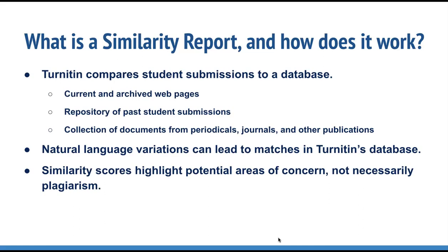Turnitin checks a student's work against a database of billions of web pages, student papers, and collected documents and publications to find instances of similarity or matches. If it finds any, Turnitin flags them for your review. Due to the nature of language, it's perfectly natural for an assignment to match against at least some of Turnitin's database. Even if a student uses quotes and references correctly, there may still be instances where Turnitin finds a match. The similarity score simply highlights any potential problem areas in a student's paper. Instructors can then use this as a tool during grading and review to determine if any academic misconduct has actually occurred.